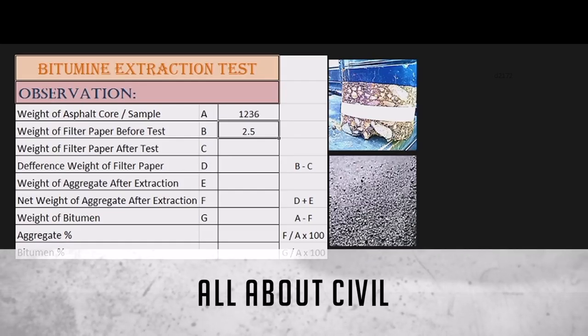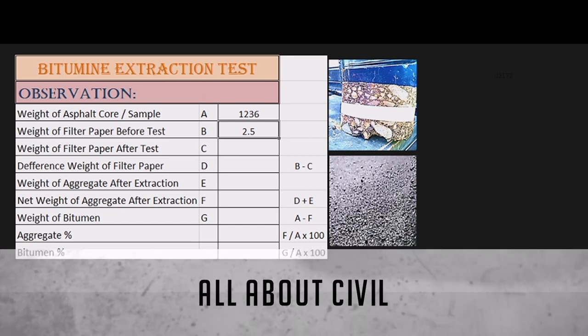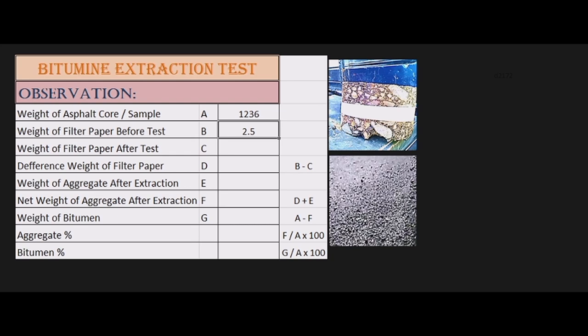We continue this until the color is clear, then we will remove it from the test. After we wash the sample and dry the sample in the oven and put the filter in the oven, the weight of filter paper will increase. We calculate B minus C, where B is before test and C is after test.